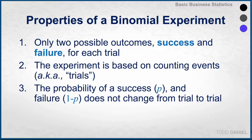The probability of success, p, and the probability of failure, one minus p, does not change from trial to trial. This being a fair coin, the probability of heads or tails is always 0.5. In this case, still tails.